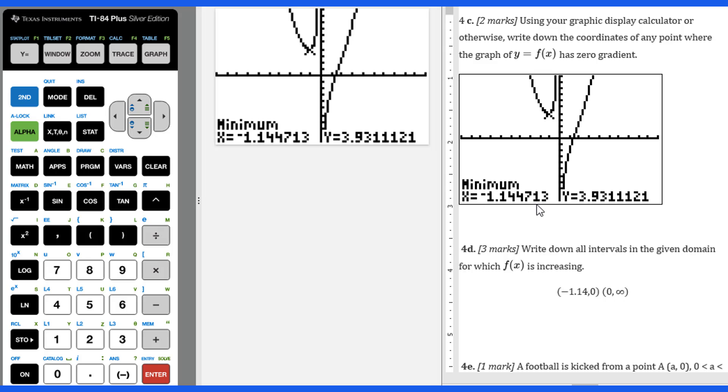For 4c, we know the minimum value will be negative 1.14 and 3.93. Then for 4d, write down all intervals in the given domain for which f(x) is increasing. We can see from this minimum point, then it's increasing here. Therefore, we can write down the interval negative 1.14 to 0. Remember, this must be open parenthesis. Zero is not in the domain. Then from here it's increasing, so we do 0 to infinity. This interval also, the function is increasing. So we have two intervals in which the function f(x) is increasing.